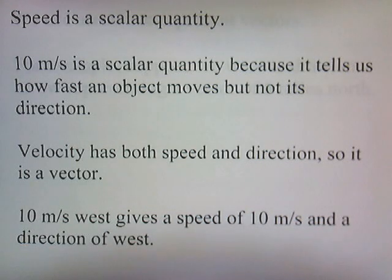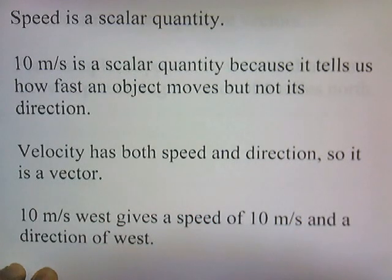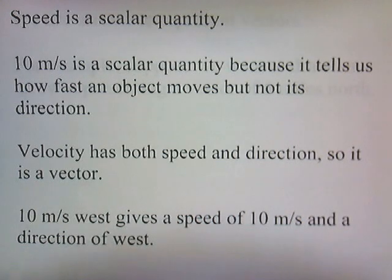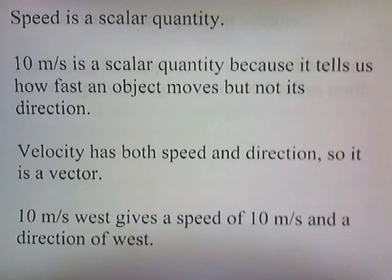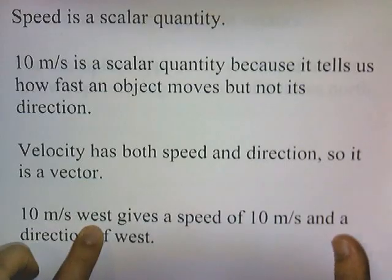Speed is a scalar quantity. 10 meters per second is a scalar quantity because it tells us how fast an object moves but not its direction — it just says how much but not which way. Velocity has both speed and direction, so it is a vector. 10 meters per second west gives a speed of 10 meters per second and a direction of west — a magnitude and a direction.